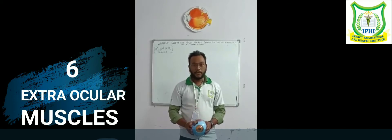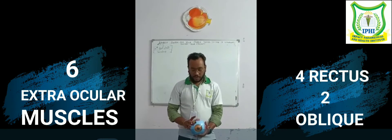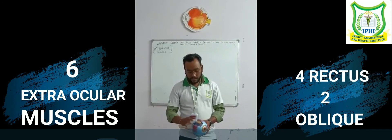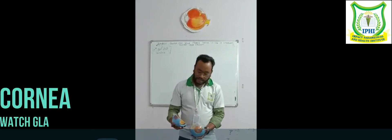This eyeball is attached to the six muscles, which helps our movement. We will talk about the anterior to posterior part of the eyeball. The anterior part of the eyeball is a transparent part.